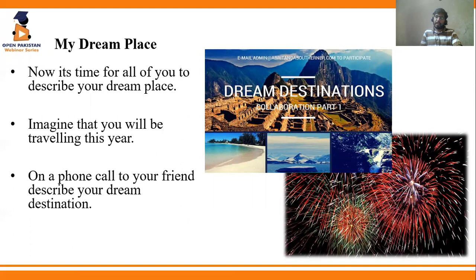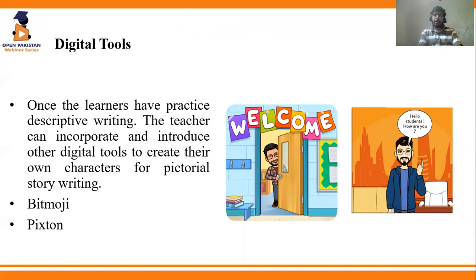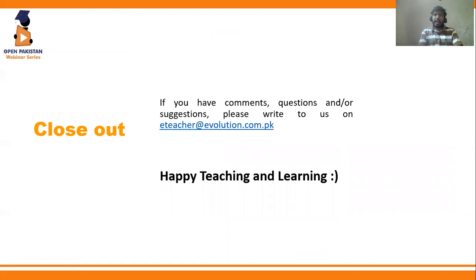You can further incorporate this activity with digital tools. Once learners have practiced through the scavenger hunt, introduce other digital tools such as Bitmoji and Pixton. You can refer back to RELO's previous webinars where these tools were explained. Give learners the opportunity to make their own Bitmoji and Pixton characters and use them to create pictorial story writing or pictorial descriptive fictional characters. These were the three simple ways to create your own fictional characters using scavenger hunt. If you have any comments, questions, or suggestions, please write to us at eteacher@evolution.com.pk. Happy teaching and happy learning!